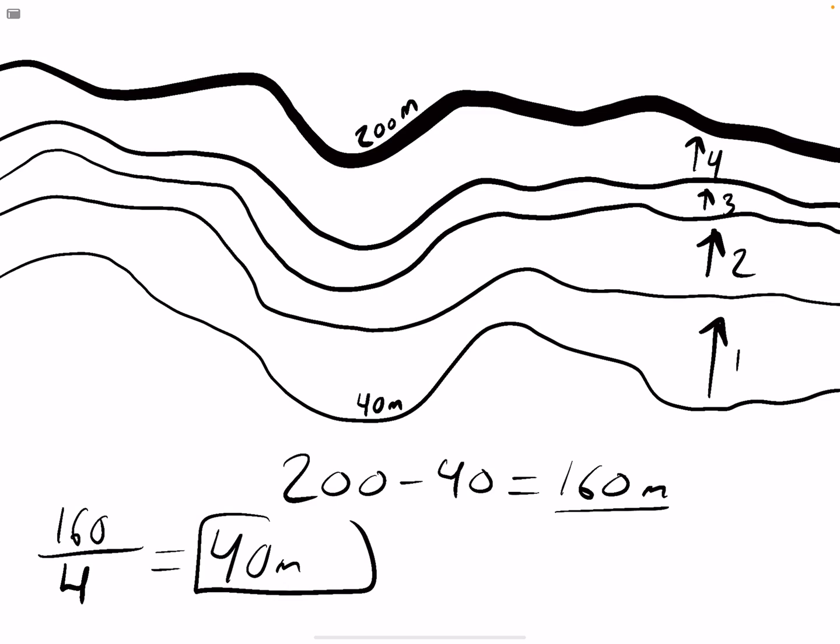So what this means, our contour interval is 40 meters. So every time we make one jump from one contour line to the next, it's 40 meters. So we have 40, 80, 120, 160, and then 200.